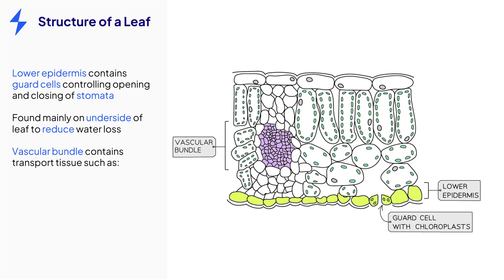The vascular bundle contains transport tissue which will move substances to and from the leaf. Transport tissue includes xylem, which transports water into the leaf for mesophyll cells to use during photosynthesis and for the process of transpiration, while phloem will transport sucrose and amino acids from the leaf to other parts of the plant.